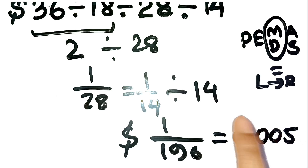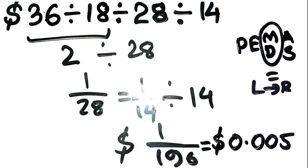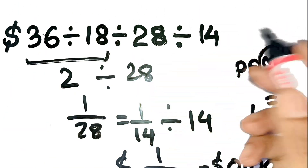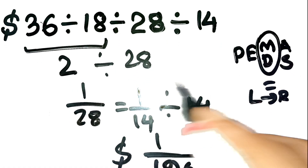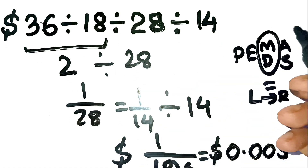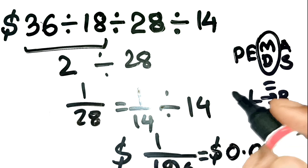Crazy, right? Think about it like compound interest. When you keep dividing your returns, they shrink fast. Every division here is like slicing your investment smaller and smaller until what's left barely counts. That's why investors always check their math — a small calculation mistake can turn a profit into a loss. So the correct answer is 1 over 196, or about half a cent, not $1.00. It's a tiny number, but a huge lesson.